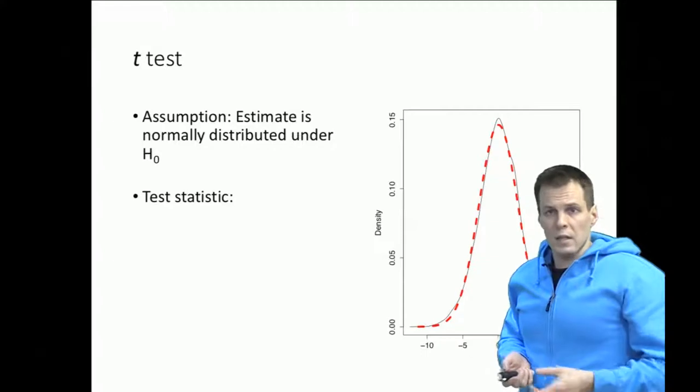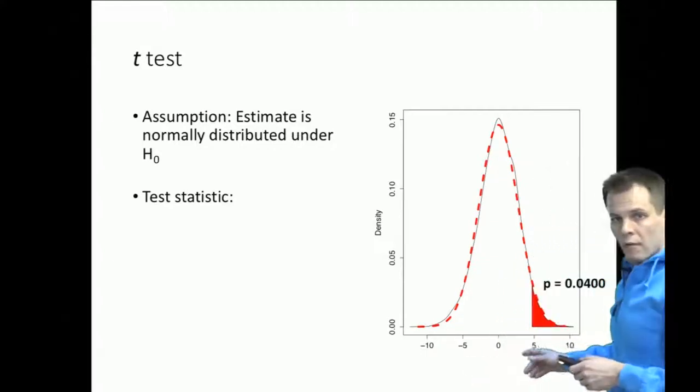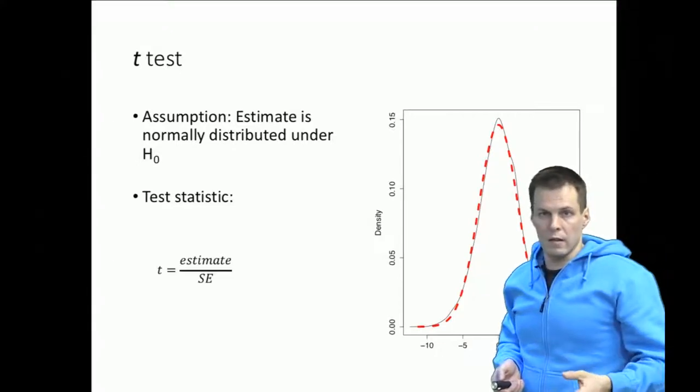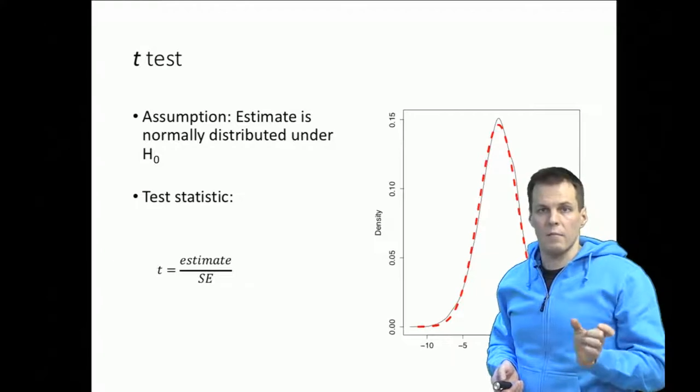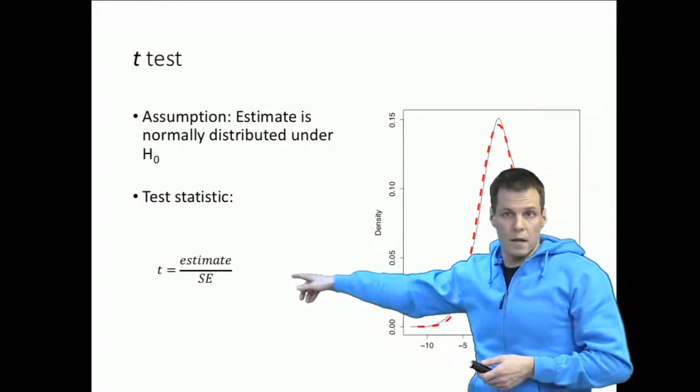The idea of a t-test is that instead of looking at the raw statistic, the raw estimate, the 4.7 here, we look at the estimate divided by its standard error and that gives us a standardized metric that we can compare against the null distribution.